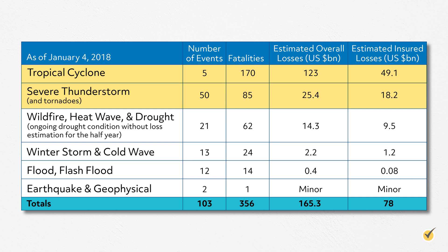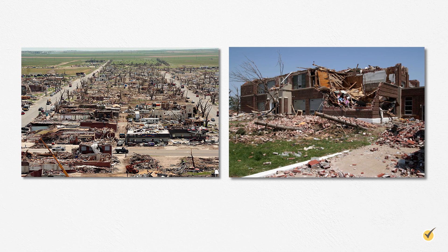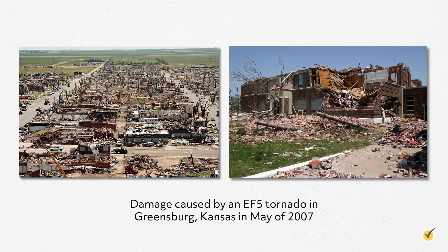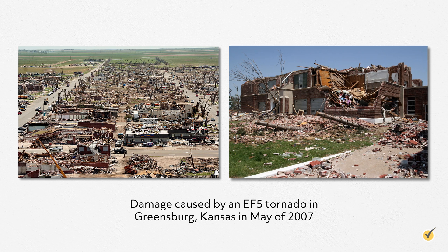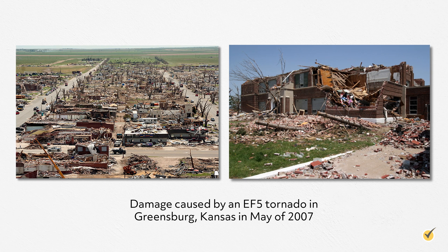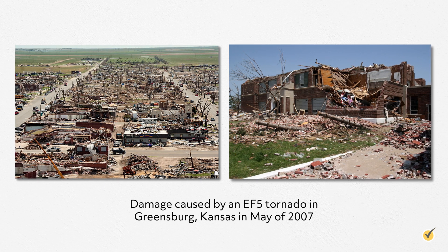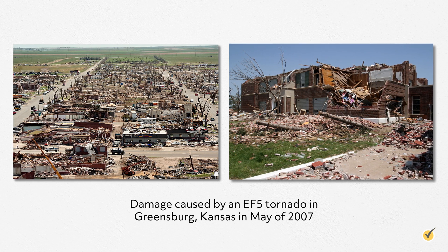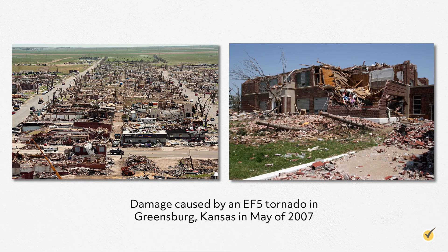Tropical cyclones will spawn tornadoes when they hit land, so the dollar losses from these hurricane-spawned tornadoes are included in the tropical cyclone category. What you're seeing here is damage caused by an EF5 tornado, which completely leveled the town of Greensburg, Kansas in May of 2007. This destruction was caused by 300 mile per hour winds over the course of three days. Needless to say, tornadoes can be pretty intense.